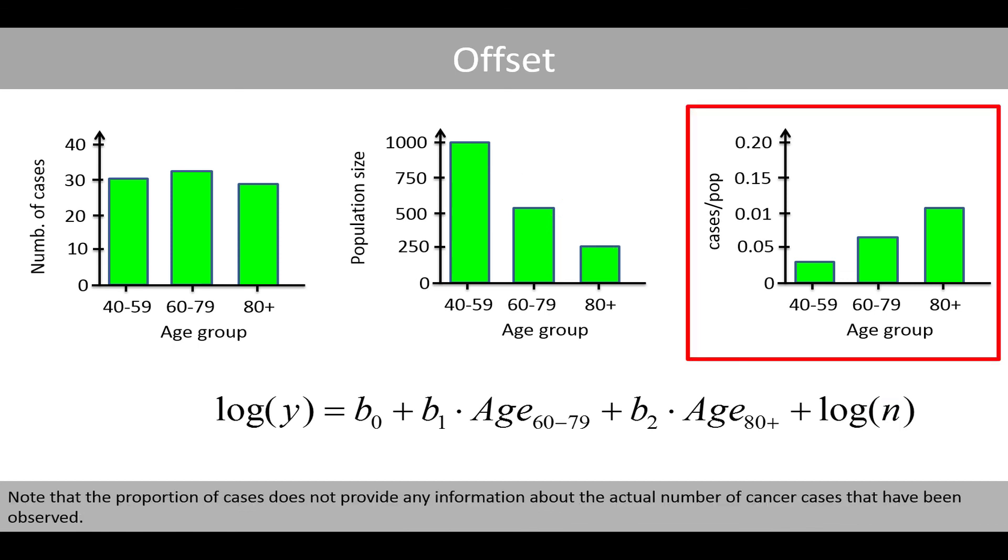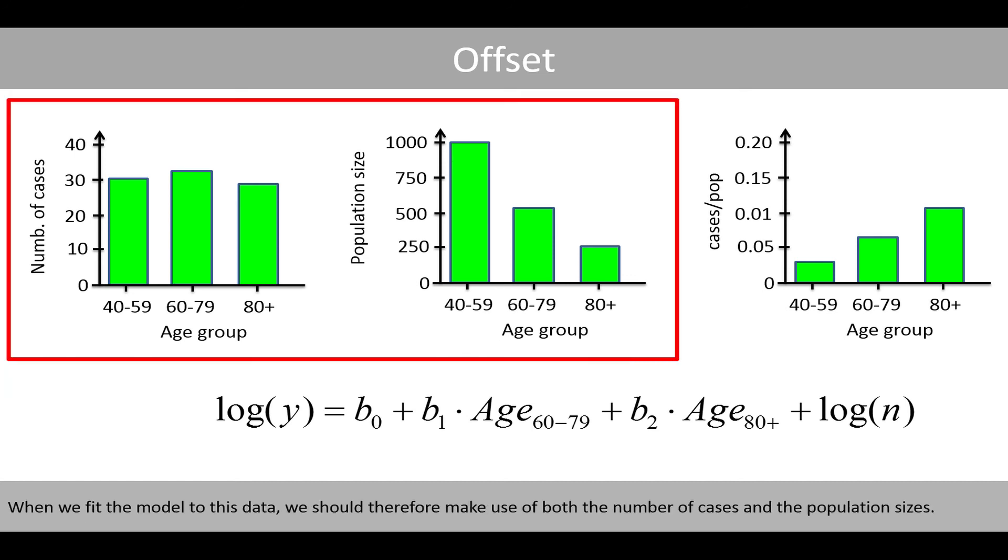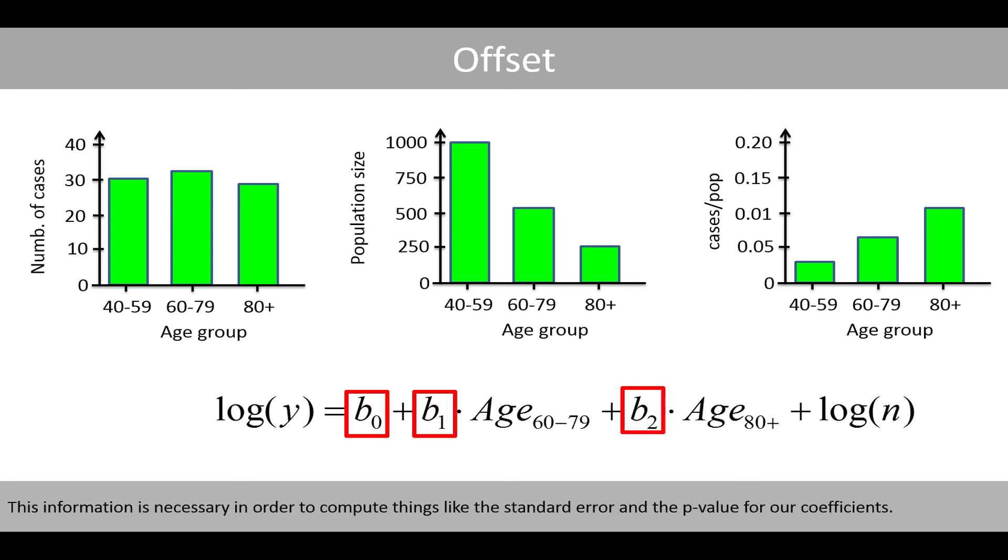Note that the proportion of cases does not provide any information about the actual number of cancer cases that have been observed. When we fit the model to this data, we should therefore make use of both the number of cases and the population sizes. This information is necessary in order to compute things like the standard error and the p-value for our coefficients.